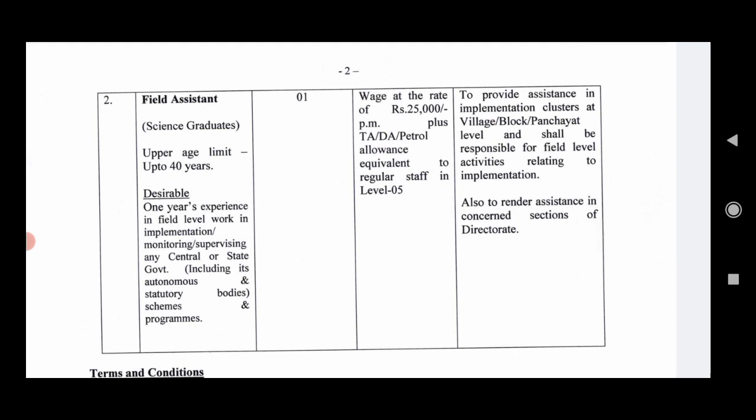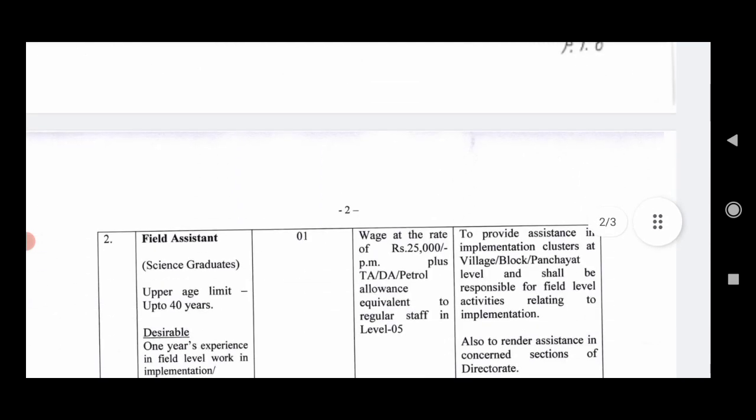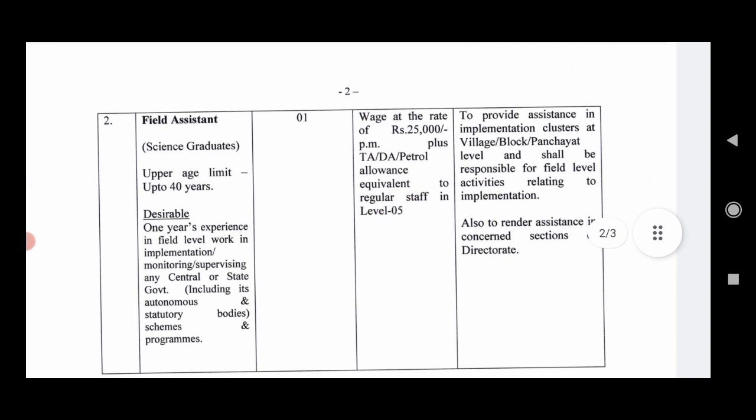The Field Assistant post is for science graduates. There are 40 vacancies. No prior experience is required. The stipend is ₹25,000 per month. You will also get TA and petrol allowance.